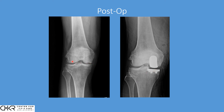We can see preoperatively we have an intact outer column with the defect on the inner column. Afterwards, we have the intact outer column, but now we have a cap and a cushion so there can be an efficient transfer of load between the bones.